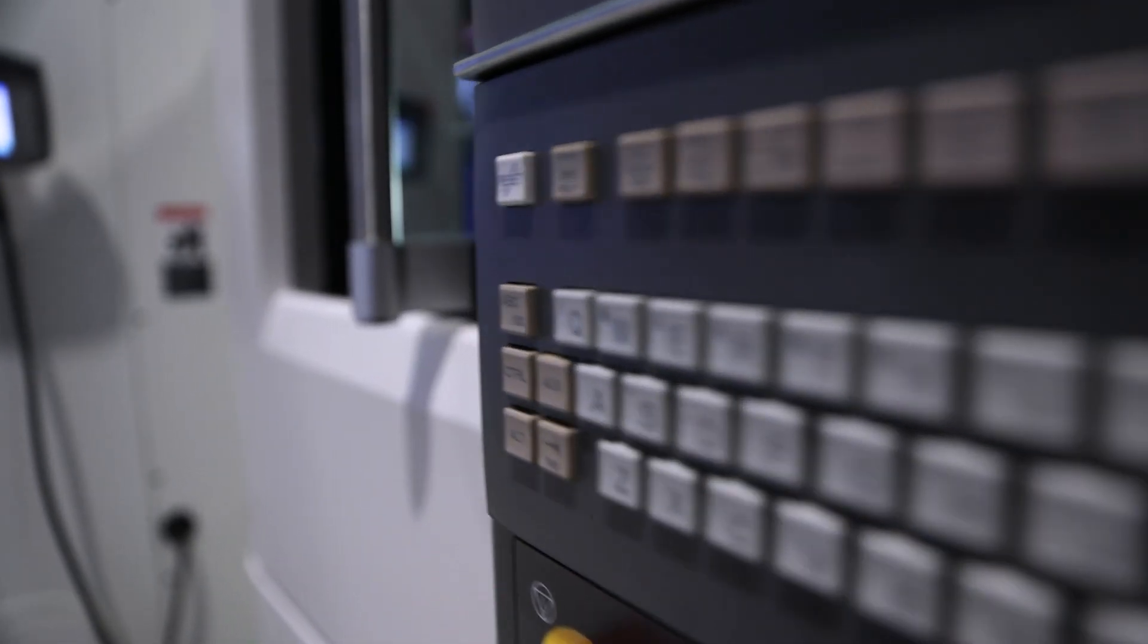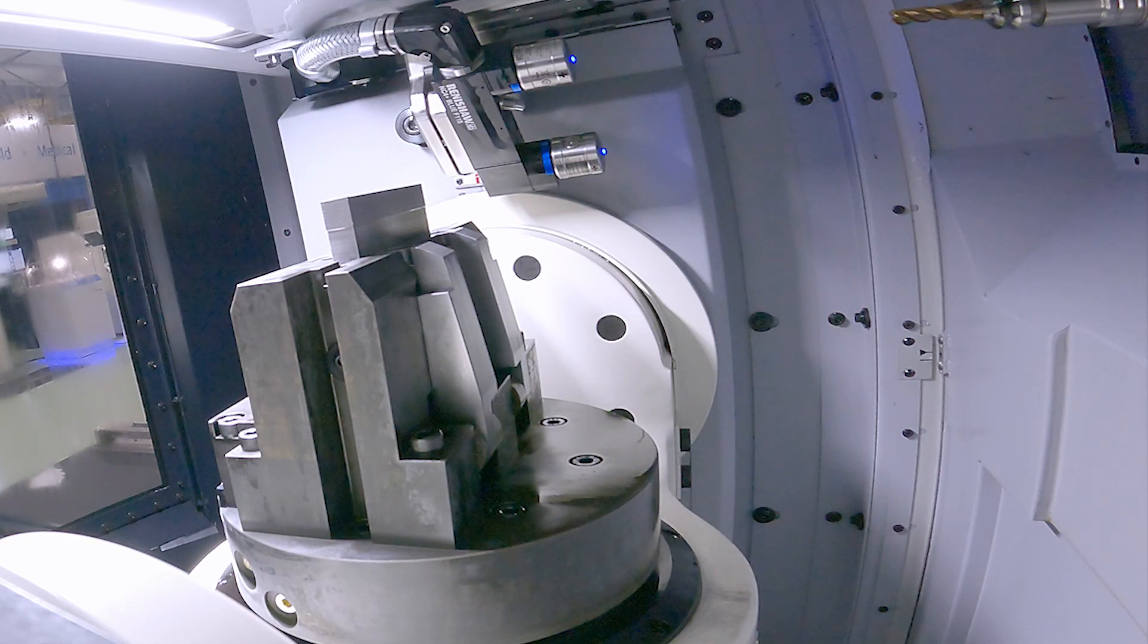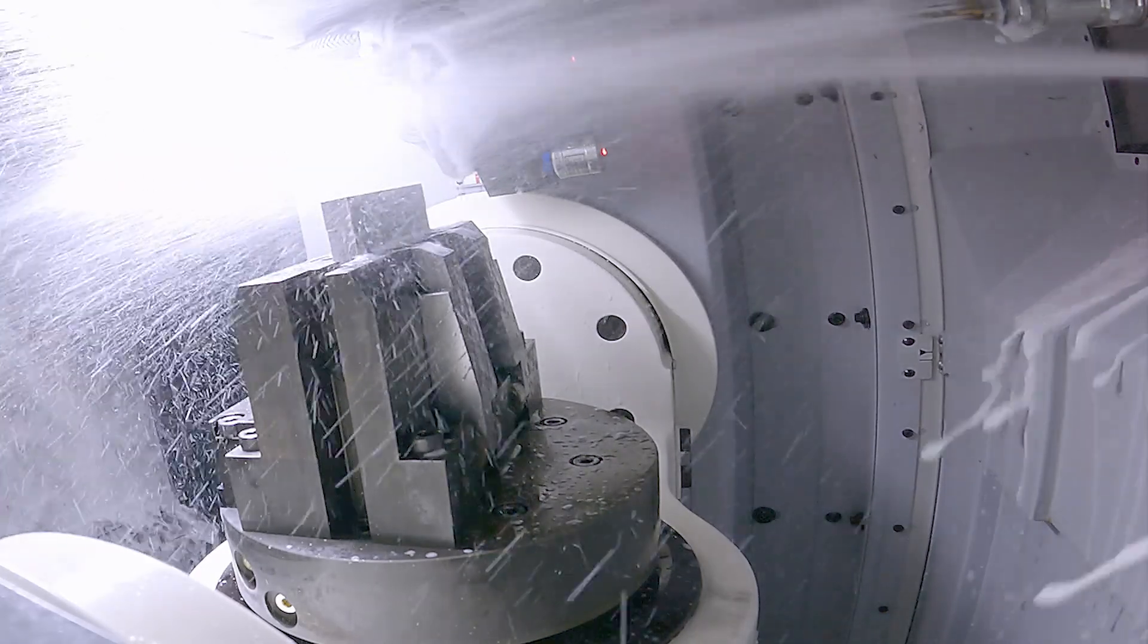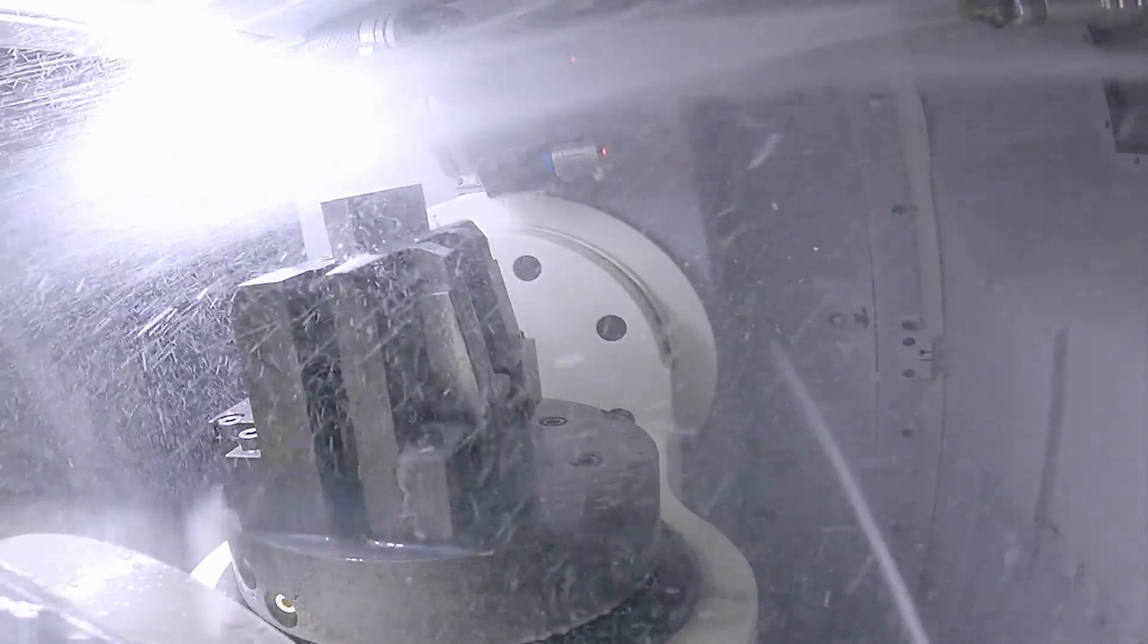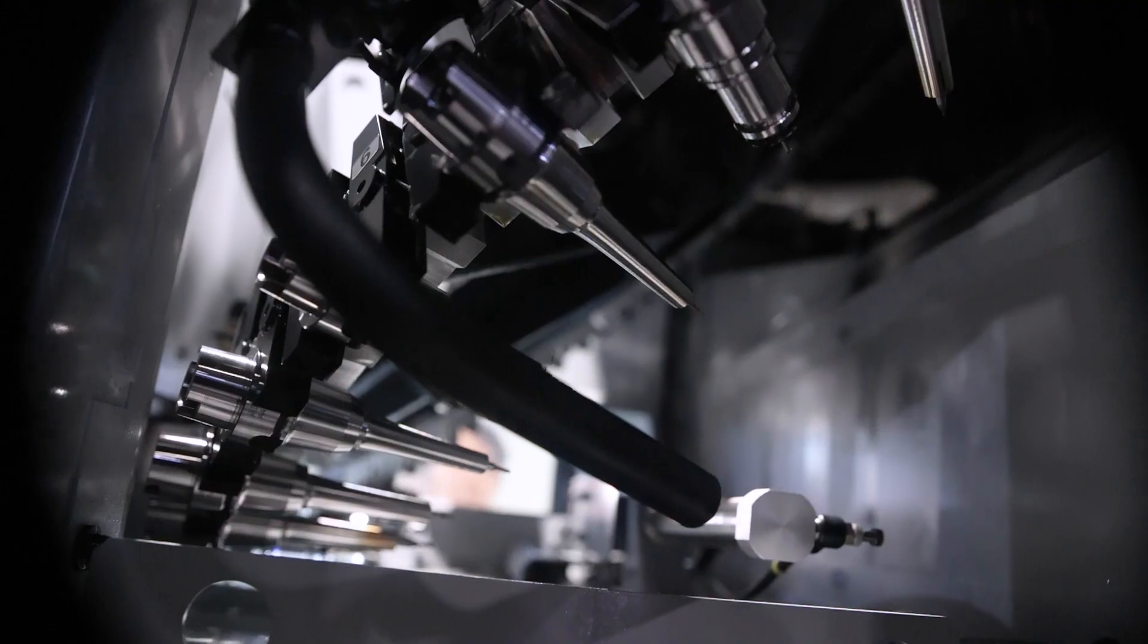On the N2-5XA, we now have a Pro-6 control that includes SGI-5. On the 20,000 RPM spindle, we have through spindle coolant and the HSK-A40 taper.